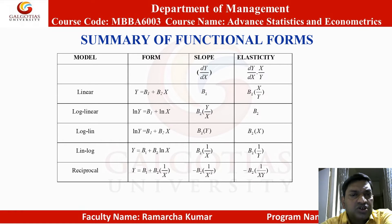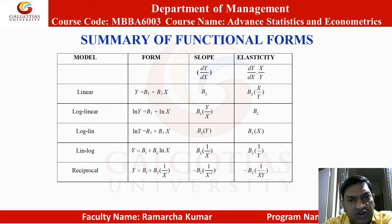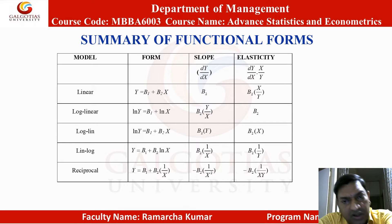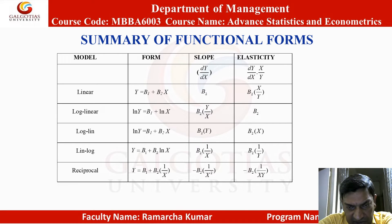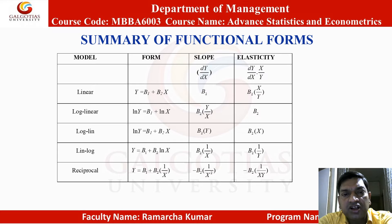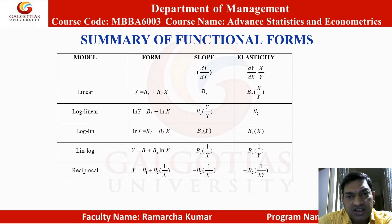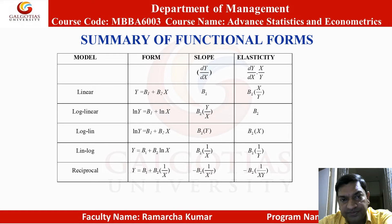Summary of functional forms: for the linear model, y = b1 + b2x, the slope dy/dx = b2 and elasticity = b2 times (x/y). For the log-linear model, ln(y) = b1 + b2 times ln(x), the slope dy/dx = b2 times (y/x). Notice this slope corresponds to a constant elasticity, and the elasticity is simply b2.